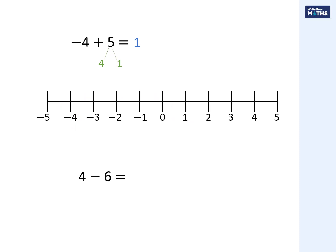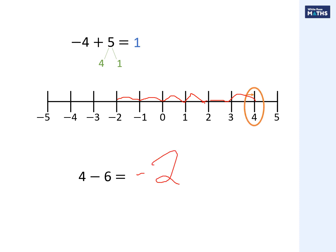Next one: four minus six. We start at four and subtract six, going to the left - one, two, three, four, five, six jumps - the answer will be minus two, or negative two. Always use a number line if that's going to help you in your exam or test.